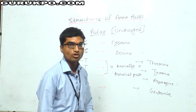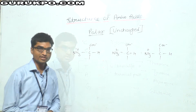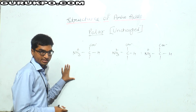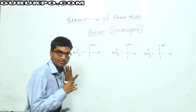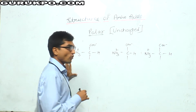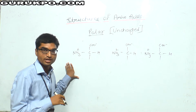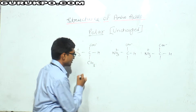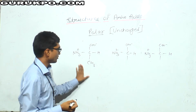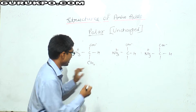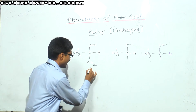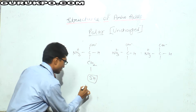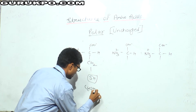In this video lecture we will discuss all types of the structure of polar uncharged amino acids. We can form all the structures of polar uncharged amino acids from alanine. This is the structure of alanine — if I replace one hydrogen with an SH group, then I will get cysteine.